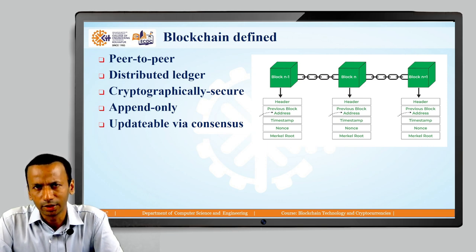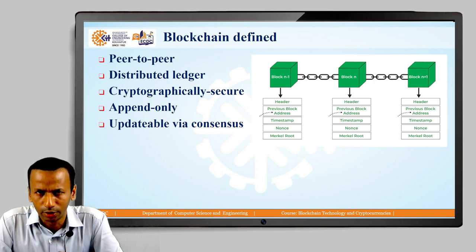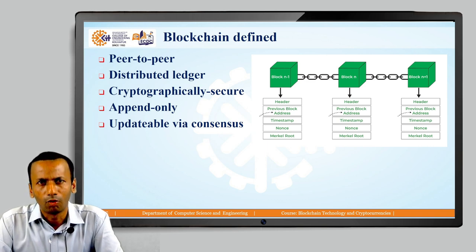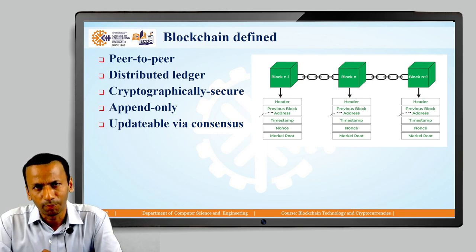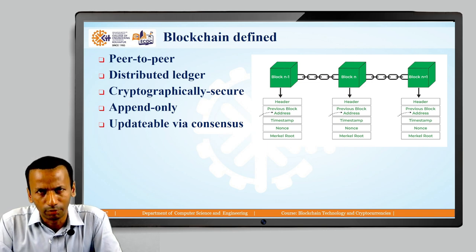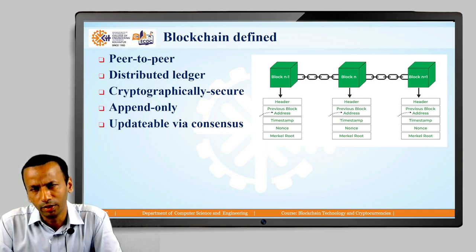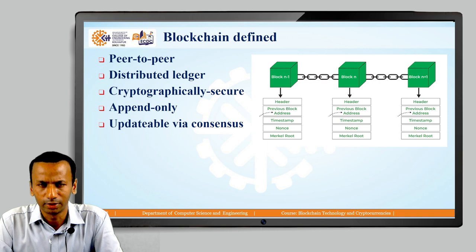Next is append-only. Whenever a new transaction is created in a blockchain network, all transactions are recorded. The transaction on which every node has agreed is confirmed and recorded in a block, and that block is added at the end of the chain. This happens only when all nodes in the network agree on that particular transaction.